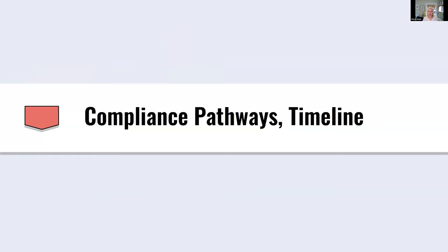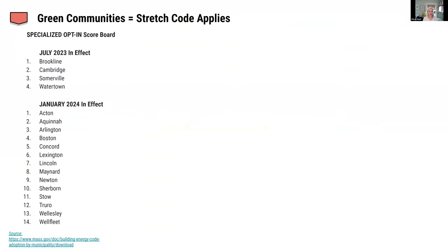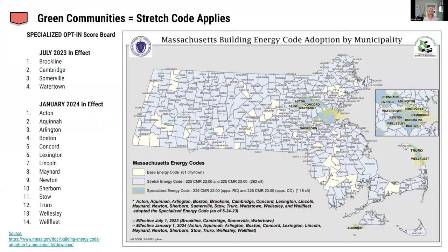To review the compliance pathways and timeline: if you're in a green community, the stretch code applies, and that is the majority of Massachusetts. There are just a few towns that are not green communities, but they may decide to opt into the stretch code and get the benefits of green communities. Every town and city that was already a green community since the mid-2000s automatically has the stretch code in effect. What's new this time around is a higher level called the opt-in specialized code that towns and cities can opt into by vote.